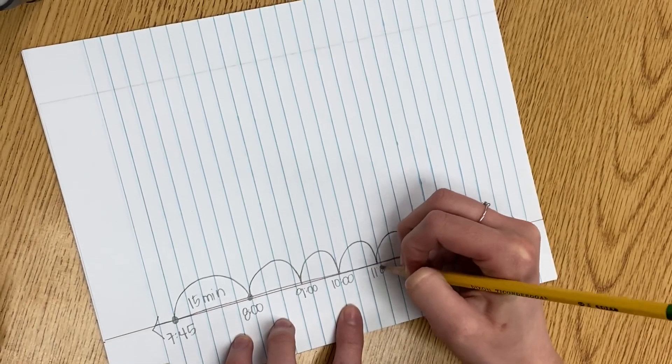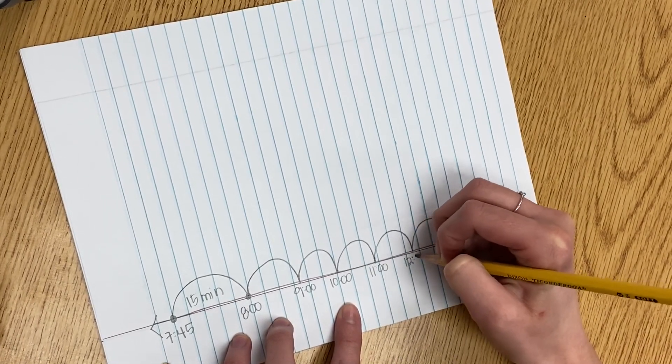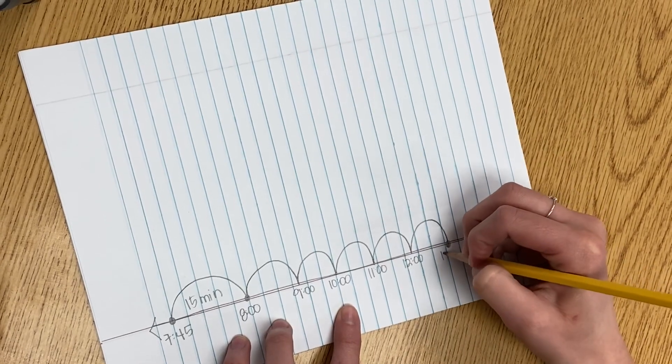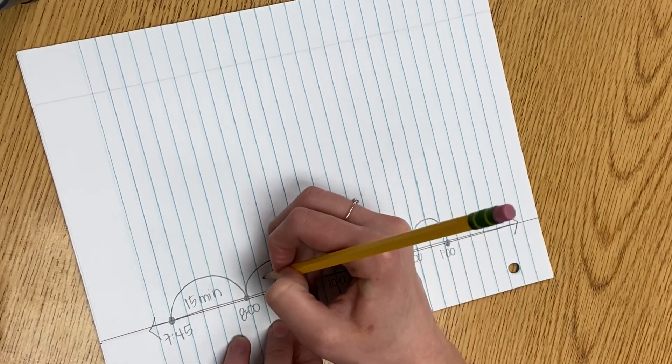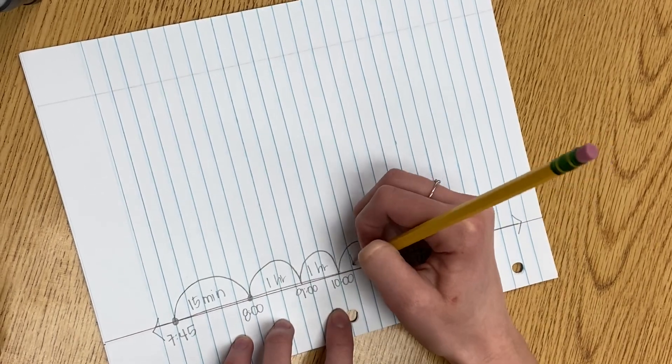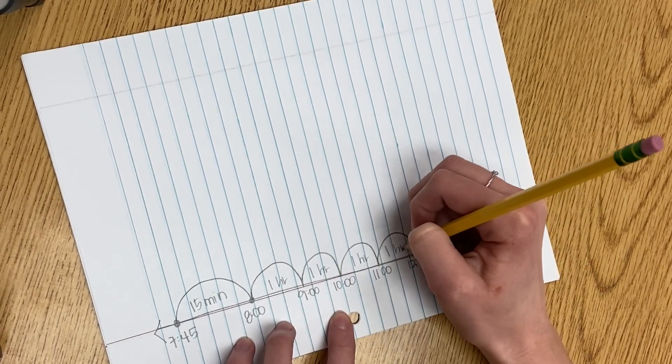And I'm labeling each time I intersect with my number line and I'm labeling each of those jumps with the duration that it took.